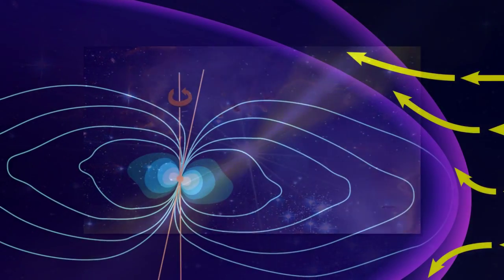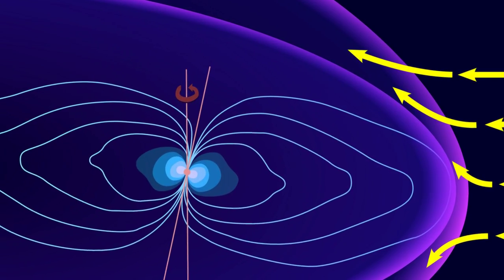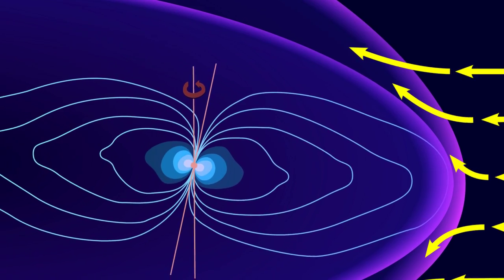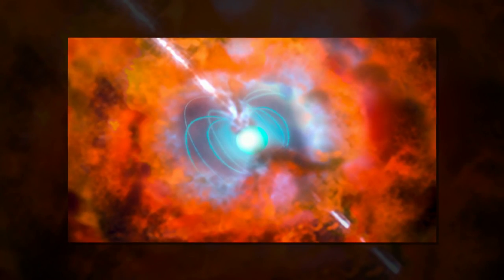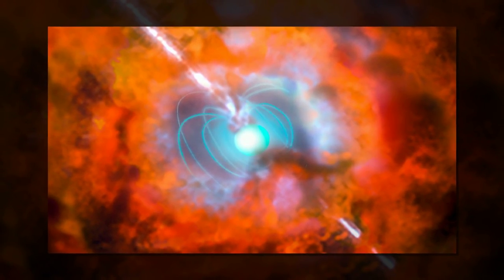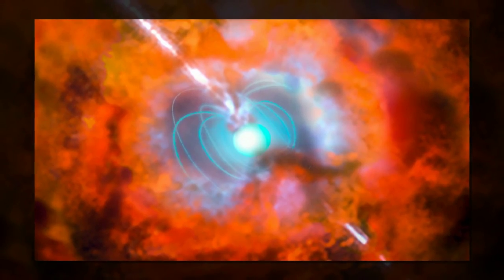FRBs were generally discovered through single-pulse search methods by using archived data of wide-field pulsar surveys at the multi-beam 64-meter Parkes radio telescope in Australia and the 305-meter Arecibo telescope located in Puerto Rico.